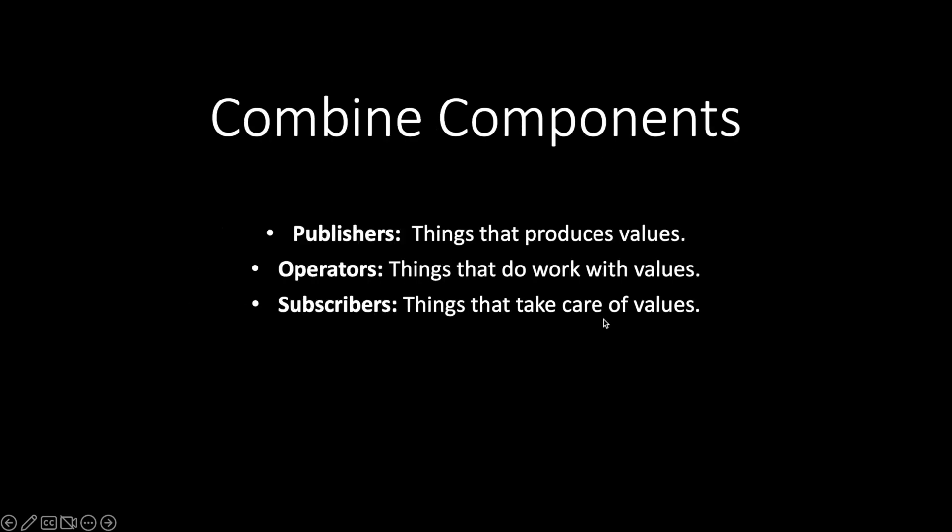Now, what are the components of Combine? Combine works on three main components: publishers, operators, and subscribers. A Publisher is a protocol. The object that conforms to the protocol delivers a sequence of values over time. It has two associated types: output and failure. It can emit events, a completion event, or a failure in case of errors.